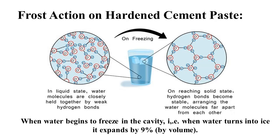To understand the frost action of hardened cement paste: when water begins to freeze in a cavity and is converted into ice, it expands by nine percent of the volume of frozen water. The increase in volume accompanying the freezing of water requires either dilation of the cavity equal to nine percent of the volume of frozen water, or forcing the excess water through the boundaries of the specimen. During this process, hydraulic pressure is generated.